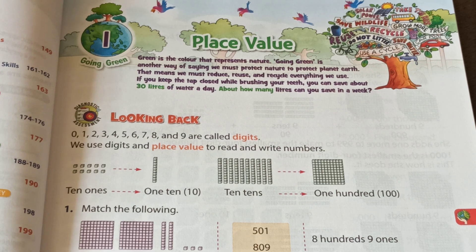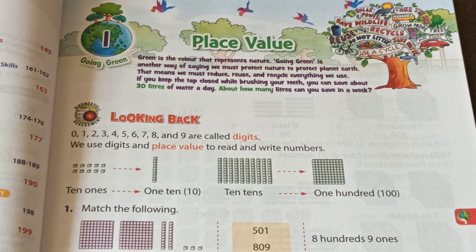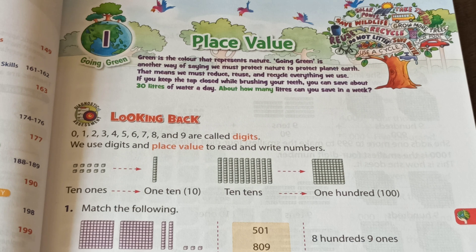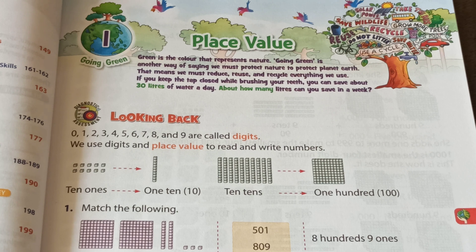Kids, green is the color that represents nature. Going green is another way of saying we must protect nature, to protect planet Earth. That means we must reduce, reuse, and recycle everything we use. If you keep the tap closed while brushing your teeth, you can save about 30 litres of water a day. About how many litres can you save in a week? Yes, you can use multiplication here.